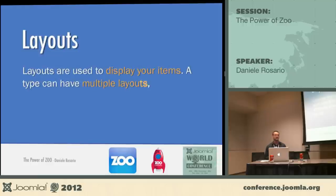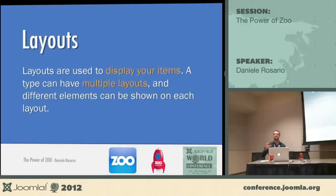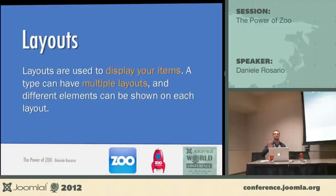Then there are layouts. Each type can be displayed in very different ways. The classic example is you have a listing of your watches: the way you see an item in the teaser — in the listing — is very different from how you see it on its full page. Zoo manages this using layouts, so you can have multiple layouts to display the same item based on where you are.